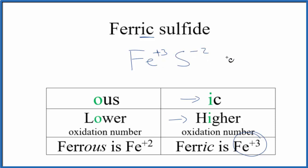At this point, we don't have a net charge of zero, so we do need to change these subscripts to make that happen. We can use the crisscross method - put the 2 here and the 3 here - and we have Fe₂S₃ for the formula for ferric sulfide.